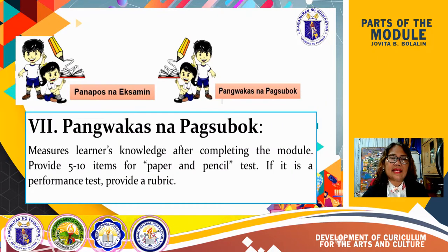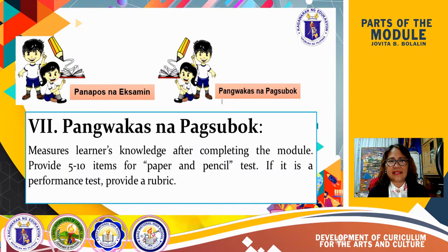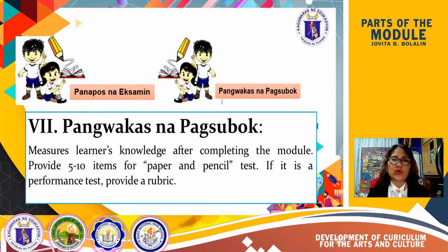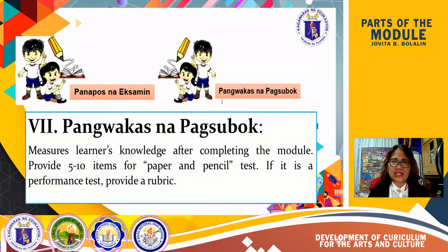Then you have Part 7 — pangwakas na pagsubok, or the post-test. This measures the learner's knowledge after completing the module, providing 5 to 10 items for a paper and pencil test. If it is a performance test, provide a rubric. The rubric must be clear on how the child is to be graded.